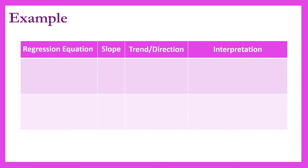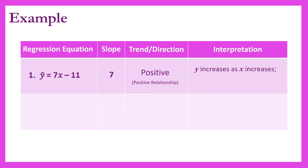Let us look at this illustration. We are given a regression equation and shall identify the slope, the trend or direction of relationship, and come up with our interpretation. The first equation is y-hat equals 7x minus 11. The slope is the coefficient of x, which is 7. Since 7 is positive, the trend or direction of the equation is positive — we have a positive relationship. For our interpretation, y increases as x increases, and y decreases as x decreases.